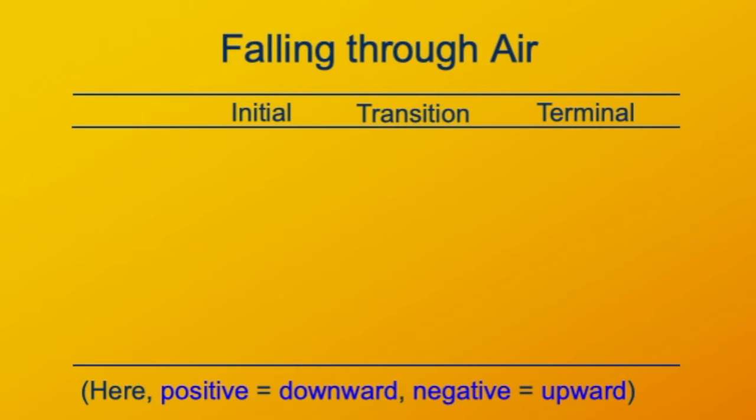I'm going to adopt the opposite convention from what I adopted when I was talking about trajectories before. Here I'm going to say that down is the positive direction, and up is the negative direction. So the force of gravity will be in the positive down direction, and the force of drag will be in the negative up direction.